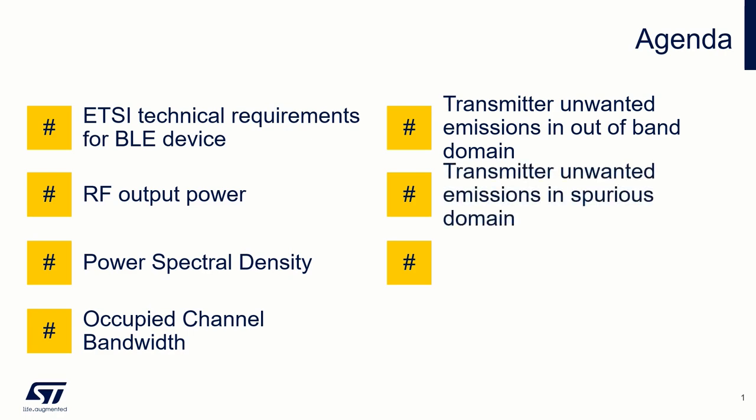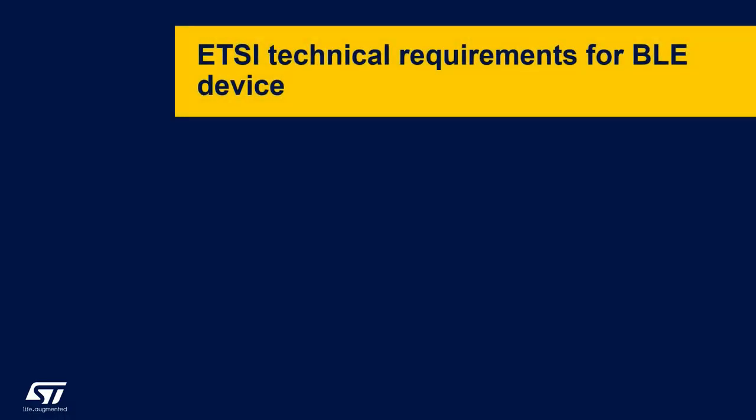As for the receiver, spurs are also found when the device is in receive mode. Now I will introduce you to the basic requirements set by ETSI for the evaluation of equipment transmitting in BLE technology.